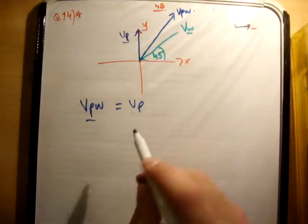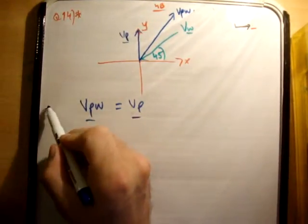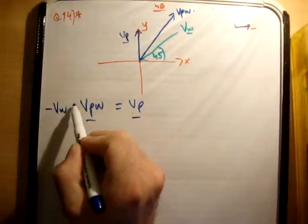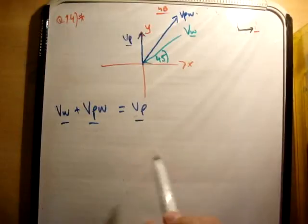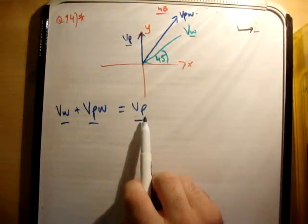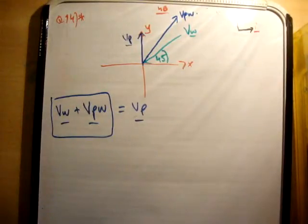So that makes perfect sense. However, because we actually have a wind, VP turns out to be VW plus VPW, just brought across the VW. So we see that where the plane actually goes is a combination or an addition of the other two vectors put together.